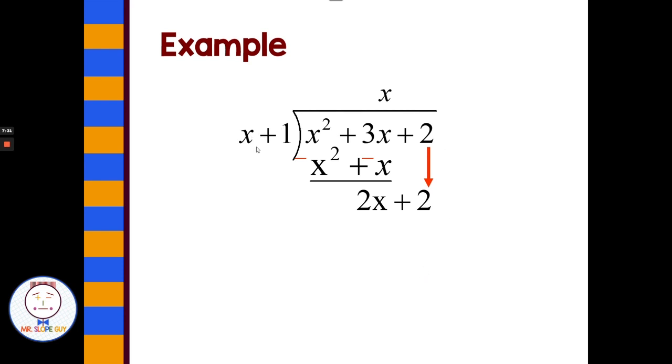Then what times x is 2x? Positive 2. Positive 2 times x is 2x, 2 times 1 is 2. Switch my signs and add, and I get no remainder. So that one came out evenly. Awesome. So what could make this problem more difficult or more challenging with division with polynomials? You need to make sure you have place value.